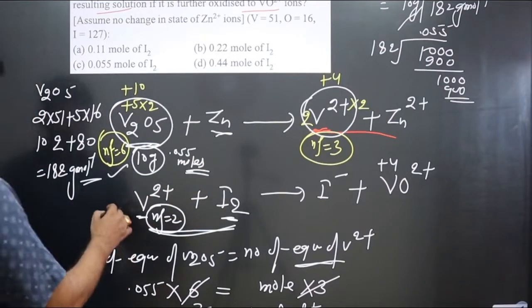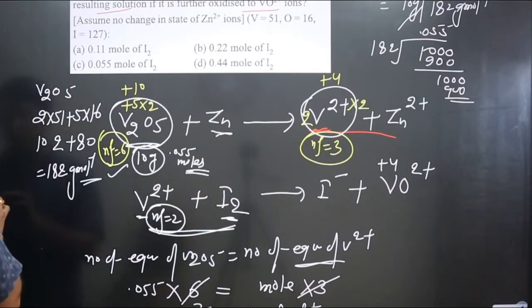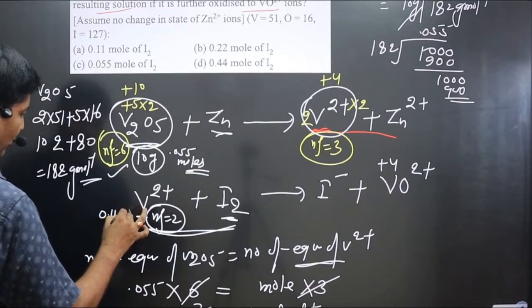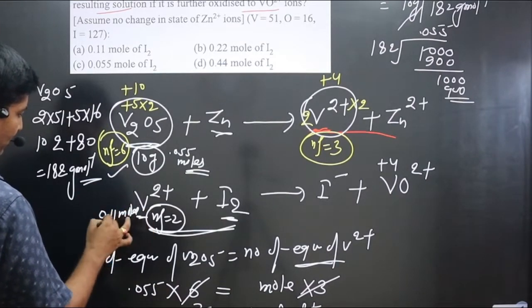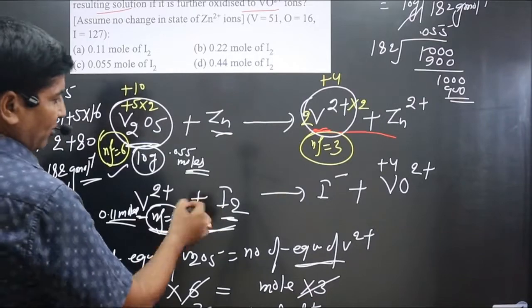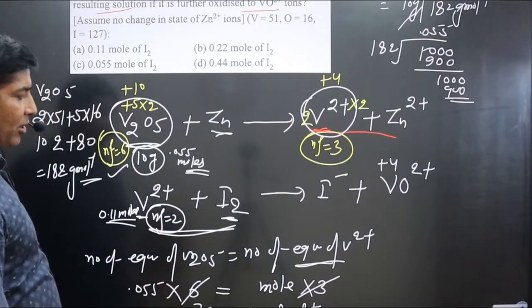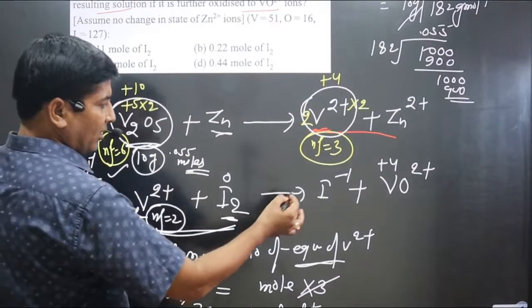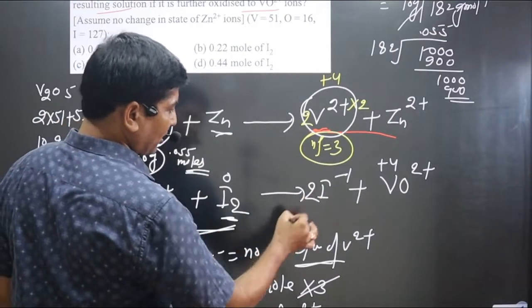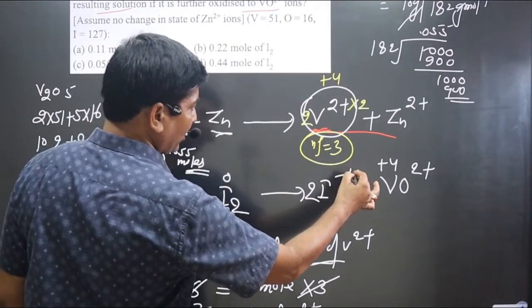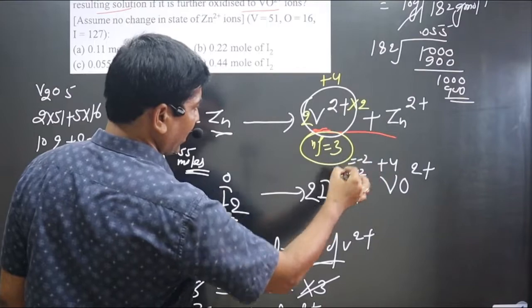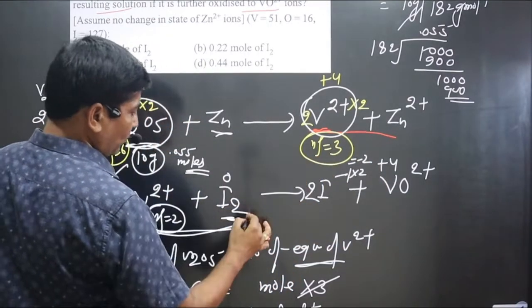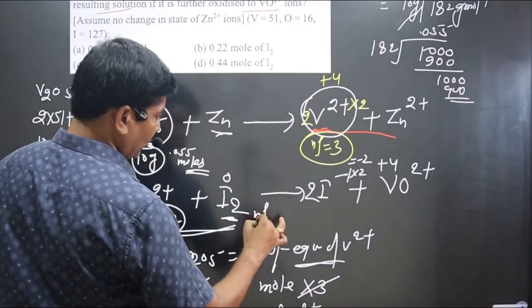So the moles we use here are 0.11. Now the N-factor for I2: iodine goes from 0 to −1. Balancing: 2 iodine atoms, each at −1 gives −2. Difference: 0 minus (−2) = 2. N-factor for I2 is 2.